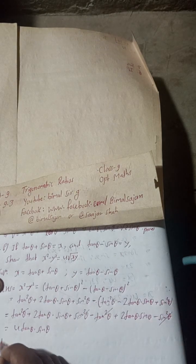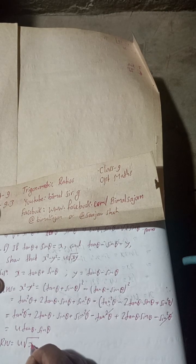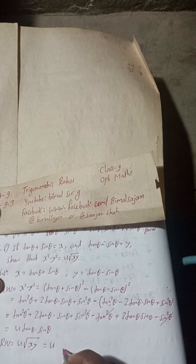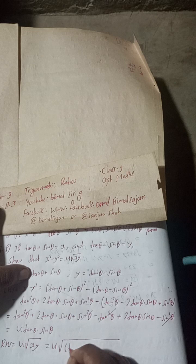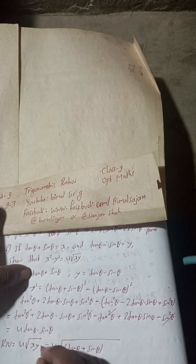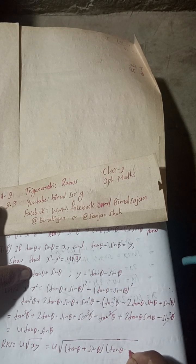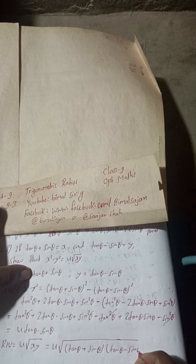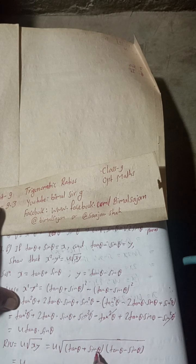So LHS = 4 tan θ sin θ. Now we will take the RHS part.